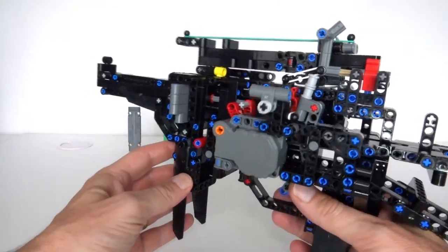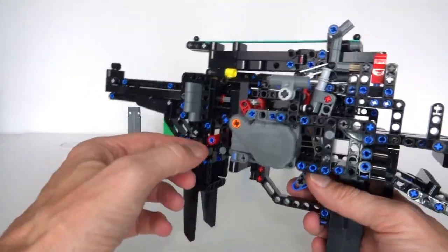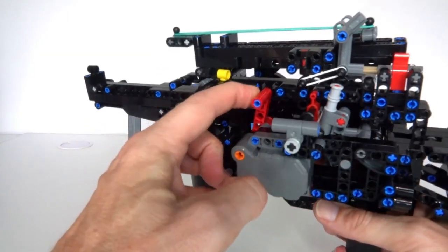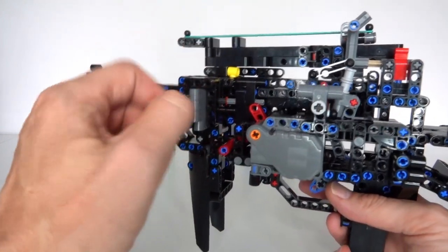So once you've fired the gun, you've got to re-cock it effectively. The way you do that, I've got this red lever down here. You just got to pull it back like that and that will re-tension the firing mechanism.